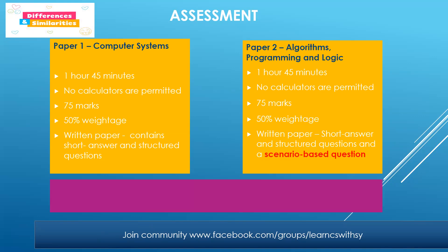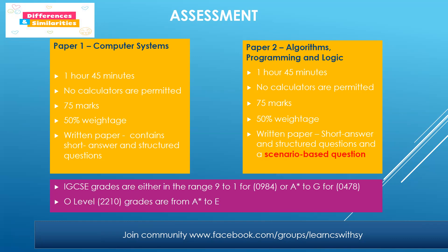Now let's talk about the differences. The only difference is the grade assignment. If a student has opted for IGCSE, the grades are either in the range 9 to 1, or A* to G under code 0984. On the contrary, O-Level students are awarded a grade from A* to E under code 0478.